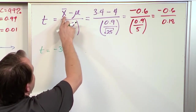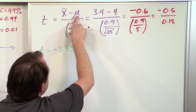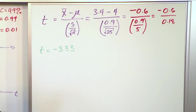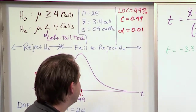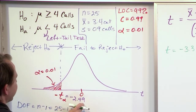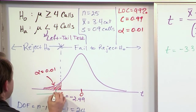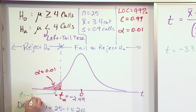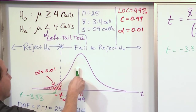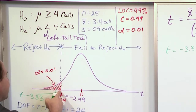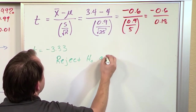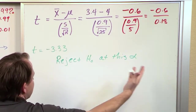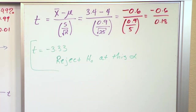Notice it's negative — the negative came about because the sample data was less than the mean. Negative 3.33 is compared to our critical value of negative 2.49. Since negative 3.33 is farther left than negative 2.49, the test statistic falls into the rejection region. Not only was it in the correct direction, but it was so far in that direction that it crossed into our rejection region.